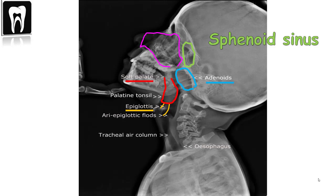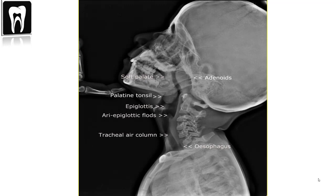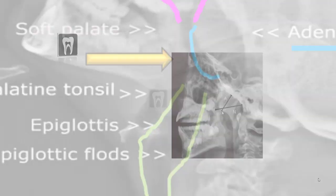The soft tissue coming down here is the soft palate, and this is the adenoid — we know it's in the roof of the nasopharynx. Starting from the nasal cavity, it looks normal as we can see the airway inside, then it gets constricted. The soft tissue projection causing this constriction is the adenoid, which could represent hypertrophy. In children, this is very important as it can impinge into the airway.